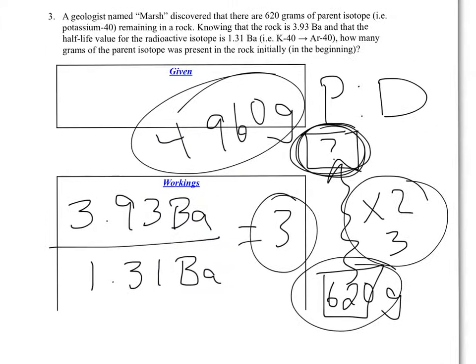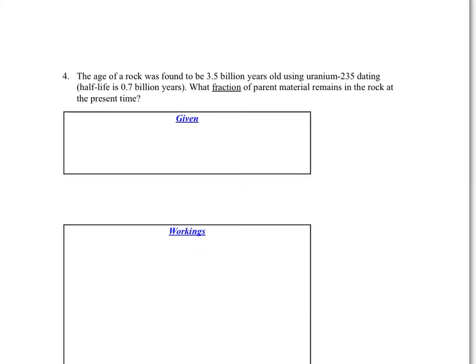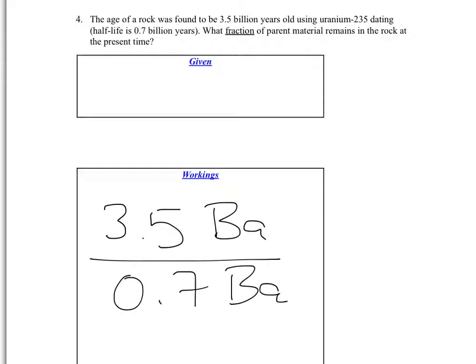Moving on to the problem. Problem number 4. It says the age of a rock was found to be 3.5 billion years old, with a half-life of 0.7 billion. So what we're going to do is take the age of the rock, which is 3.5 billion, and divide by how long it takes for one half-life. So we've done this a number of times in these different problems. So 3.5 divided by 0.7 equals, so that tells us that we have 4 different half-lives that have occurred.